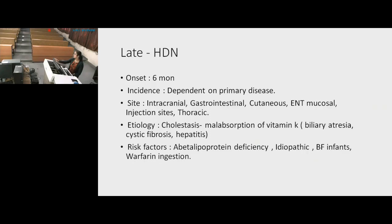The third type is late HDN, with onset at around 6 weeks to 6 months. Incidence depends on the primary disease. Sites include intracranial, GI, cutaneous, ENT, mucosal, injection sites, and thoracic. Etiology is malabsorption of vitamin K — causes include cholestasis, biliary atresia, cystic fibrosis, and hepatitis. Risk factors include abetalipoproteinemia; it can also be idiopathic, occurring in breastfed infants.